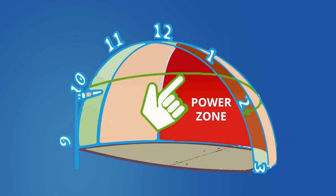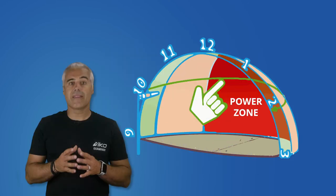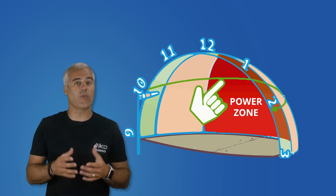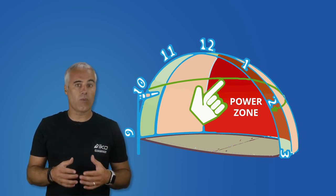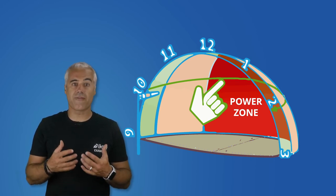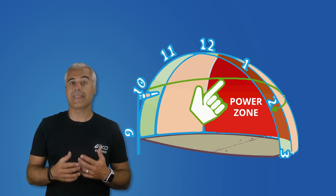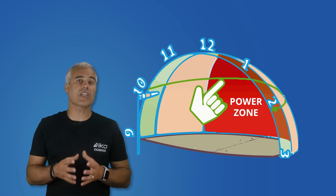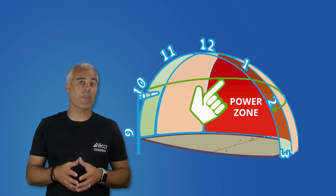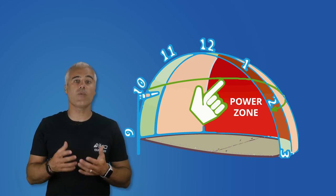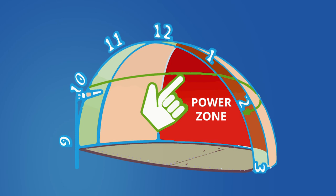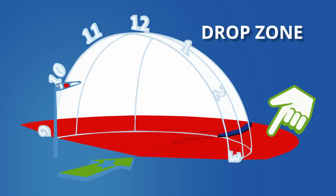The power zone is the downwind side of the wind window. When the kite is flying forward, leading edge first, it will always generate its maximum power in the wind window downwind, as it's where it has the highest speed.